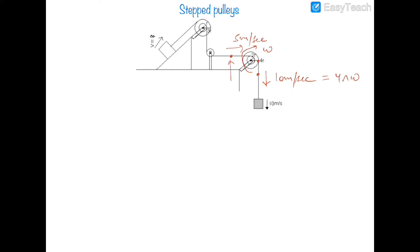Since 4rω = 10, we get 2rω = 5, so that point moves at 5 meters per second. Now the string is attached at a point with radius 3r relative to the reference radius r, so its velocity will be 3 times 5, giving v = 15 meters per second. That is the velocity of this block.